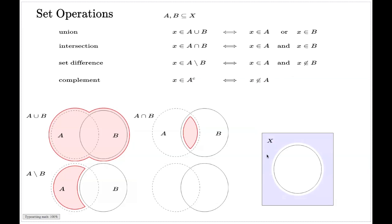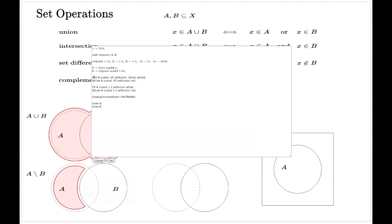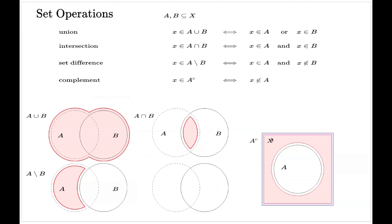For instance, if this big box represents the big set X and the solid circle represents the set A, then the complement of A will be the region shaded in pink — that is, all the points in X which do not belong to the set A.